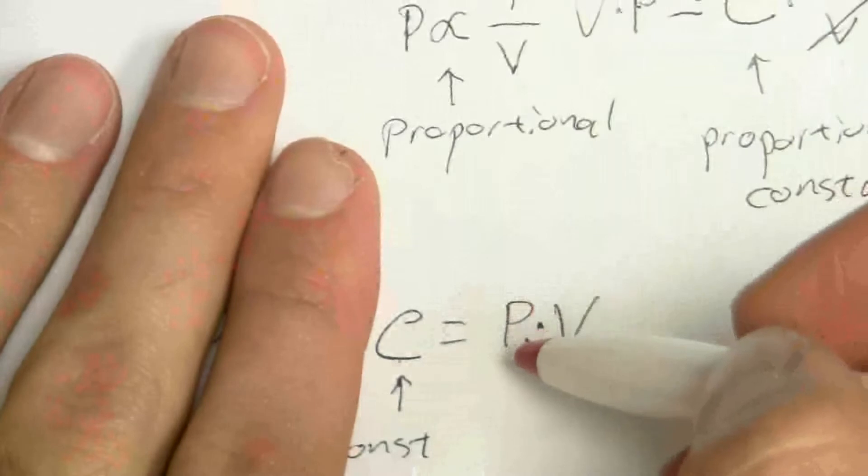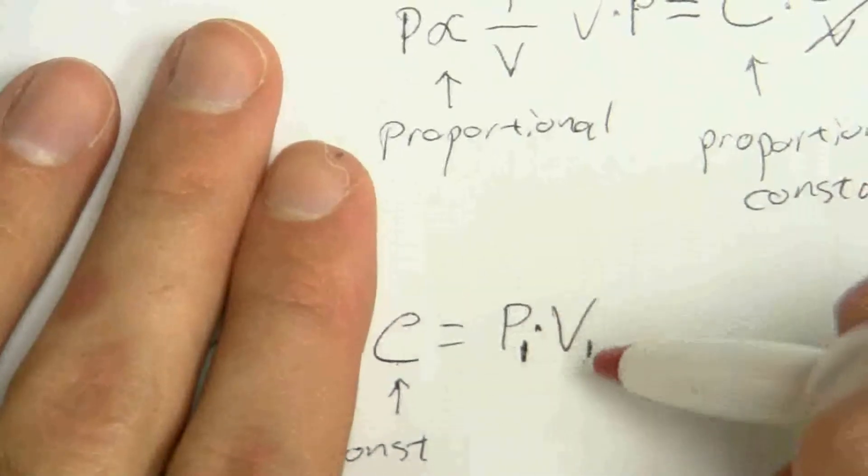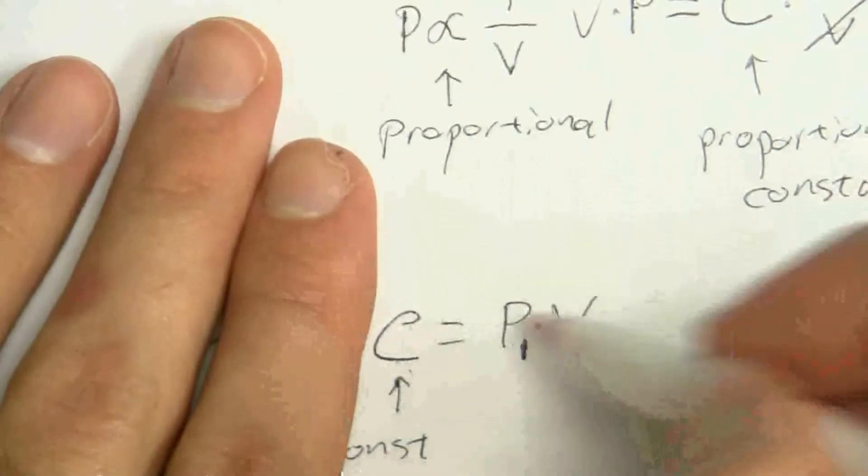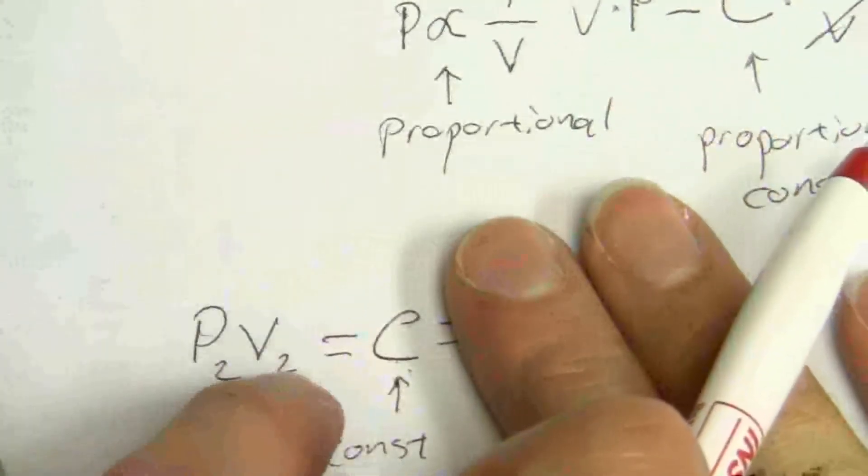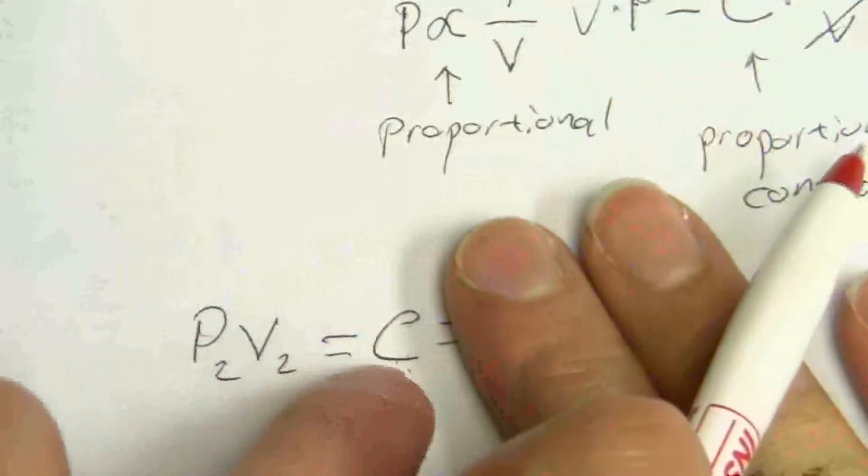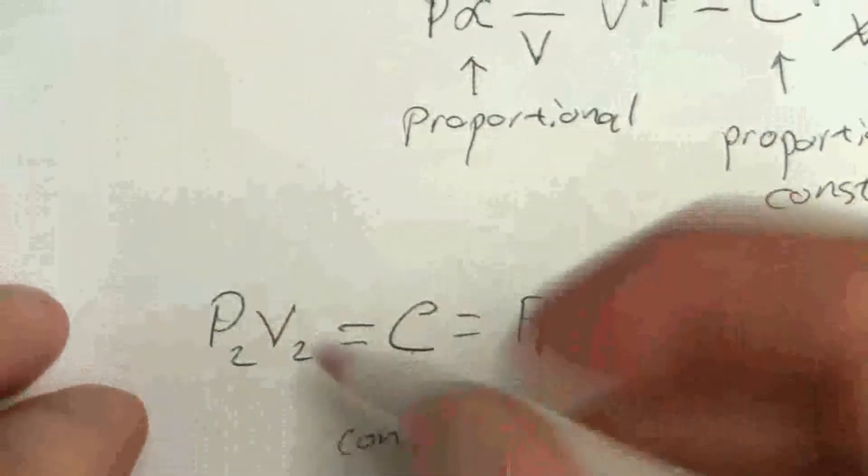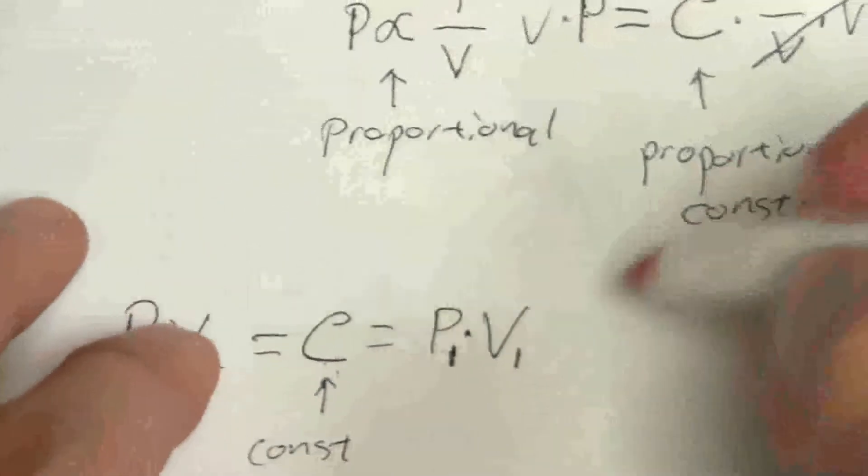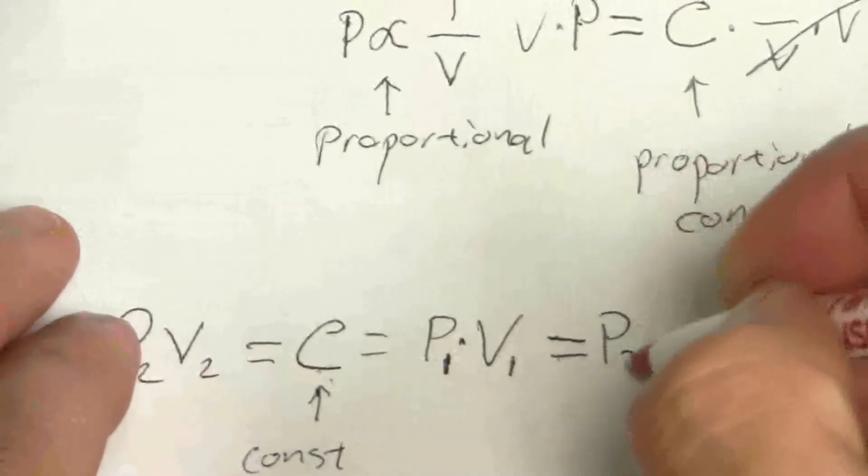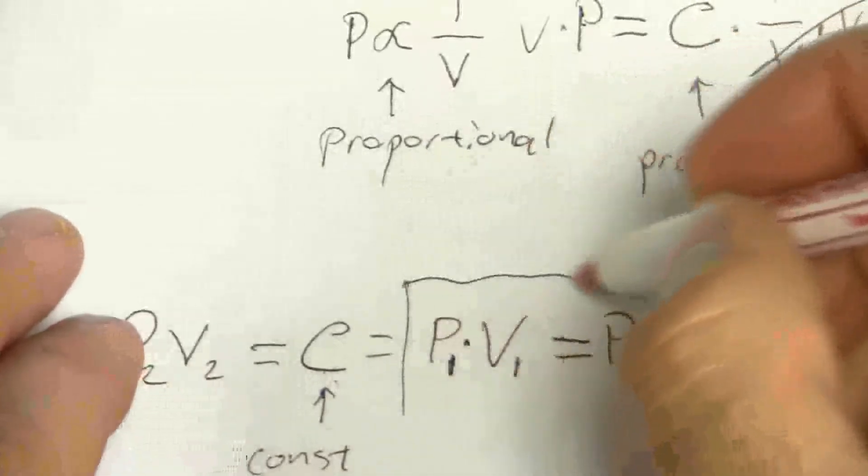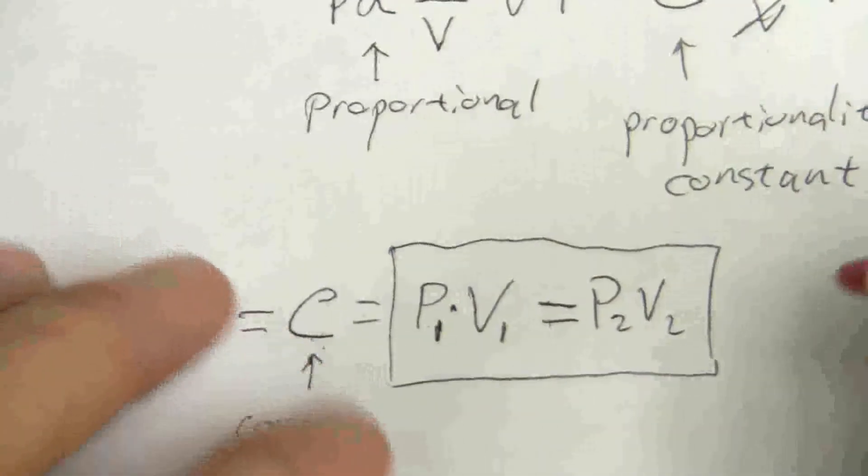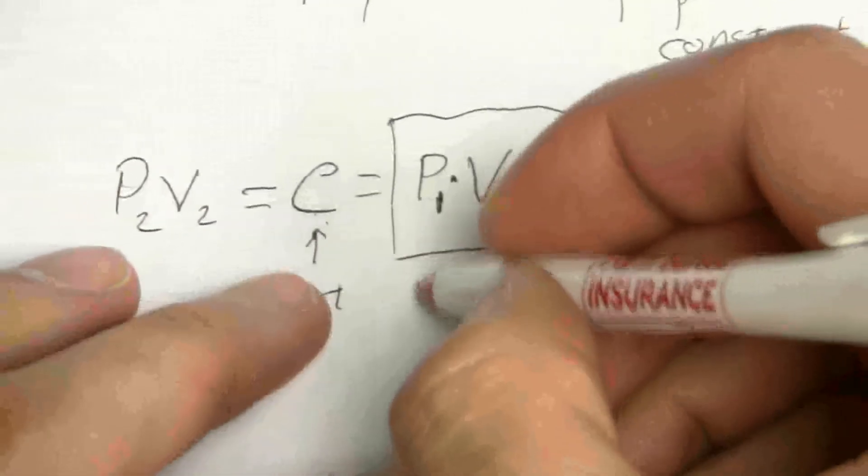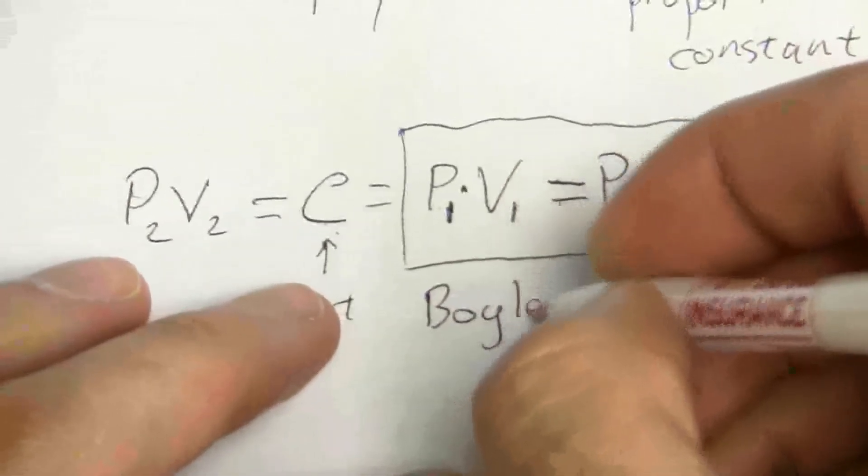So whether I have one set of conditions, whatever they are, if I increase the pressure, the volume decreases so that when I multiply them, it's constant. So that means if this is my increased pressure and this is my decreased volume, it's equal to that constant. And so what I have is this relationship, P1 V1 equals P2 V2. That's the form that we typically write it in. And this is known as Boyle's Law.